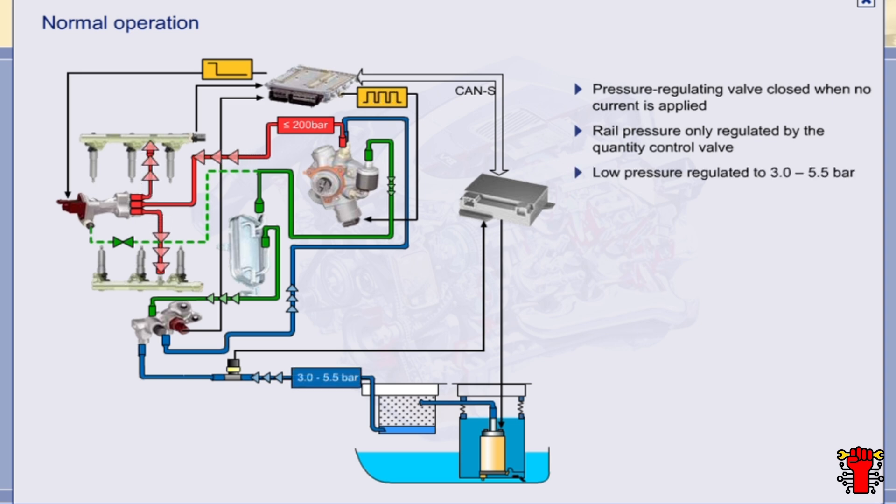The low fuel pressure is regulated to between 3 and 5.5 bar in normal mode. The control parameter for low pressure is the fuel temperature. The aim is to prevent bubble formation.